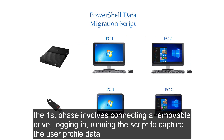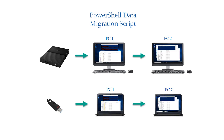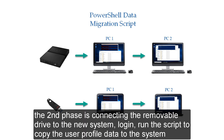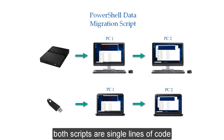The first phase involves connecting a removable drive, logging in, and running the script to capture the user profile data. The second phase is connecting the removable drive to the new system, logging in, and running the script to copy the user profile data to the system. Both scripts are single lines of code.